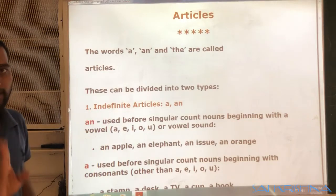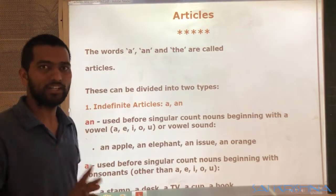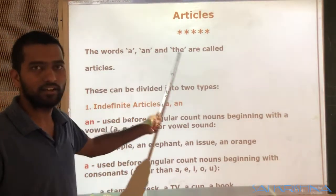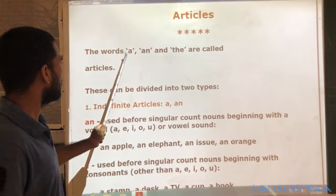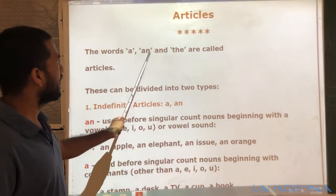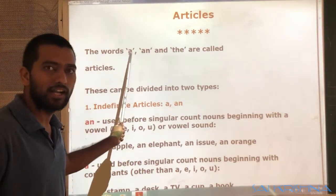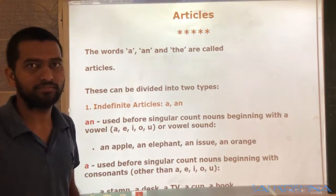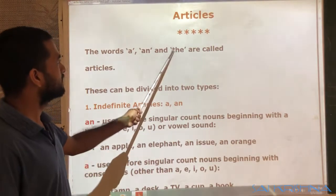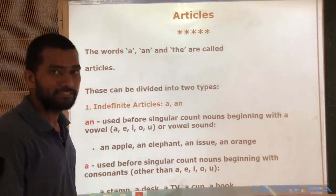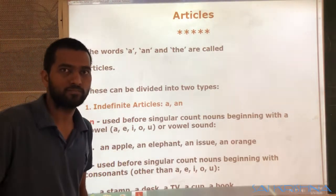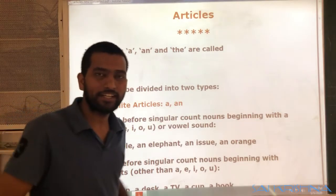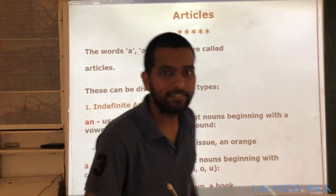There are three articles: a, an, and the. Here, a and an are called indefinite articles, and the is called the definite article.